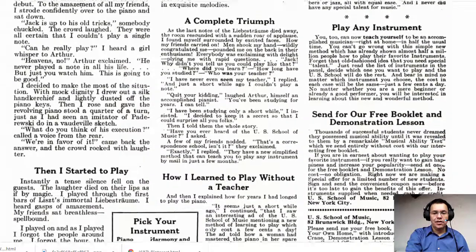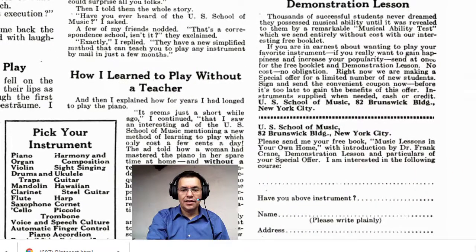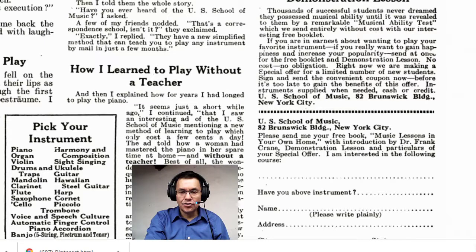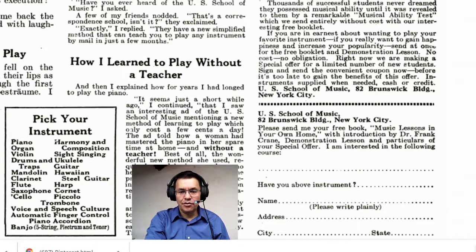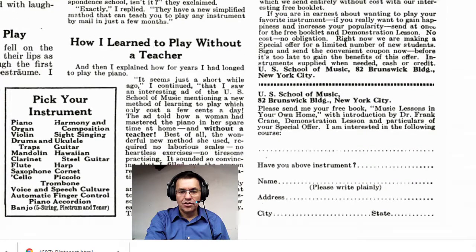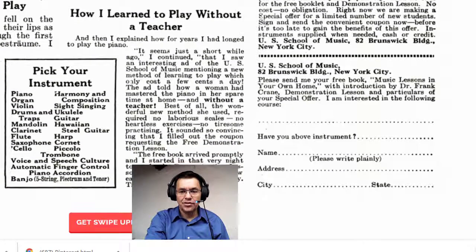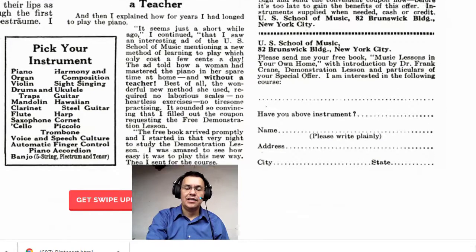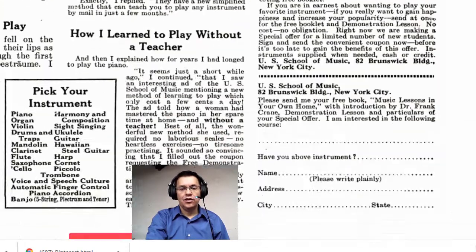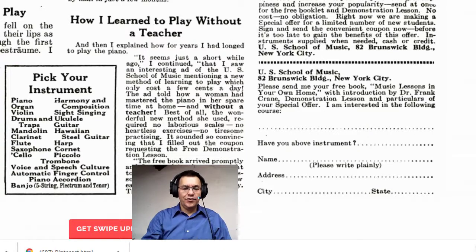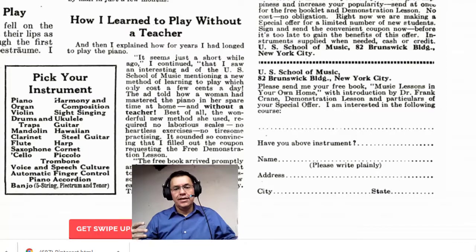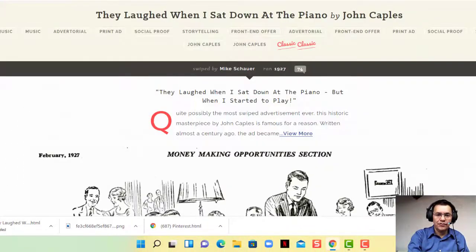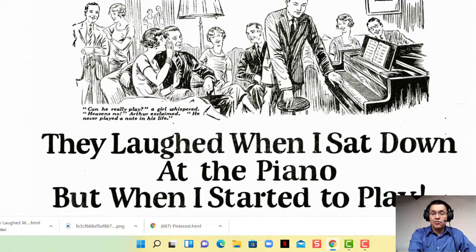In the ad, you can see they're asking the reader to send in information — instrument needed, cash or credit, a special coupon. 'Send for the free book: Music Lessons in Your Own House, with introduction by Frank Crane, demonstration lessons, and particulars of your special offer. I'm interested in the following course' — then they list what instrument and collect the address. Then they sent back a full second sales letter with testimonials from people who knew nothing about music and became masters.